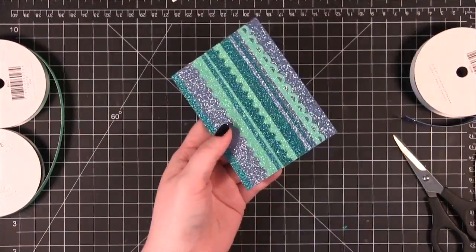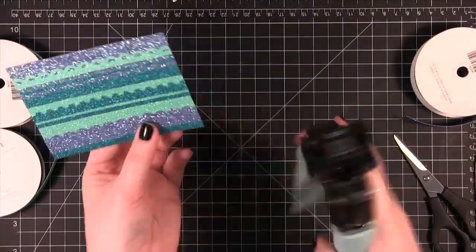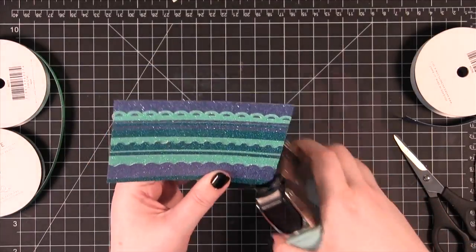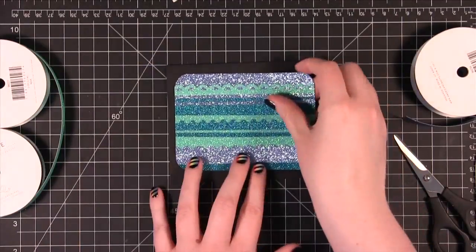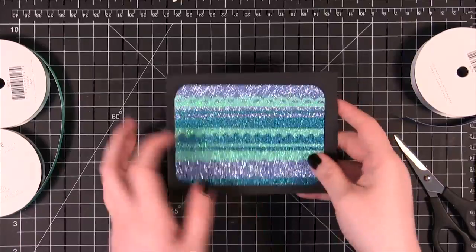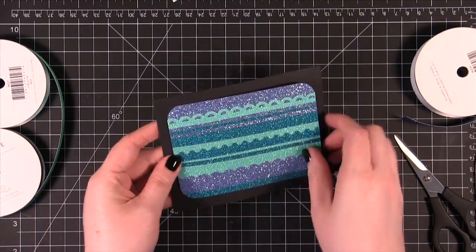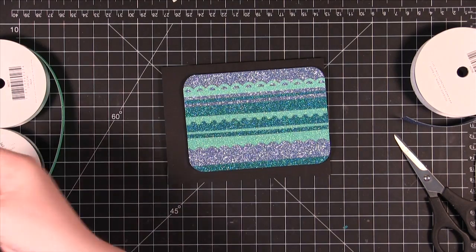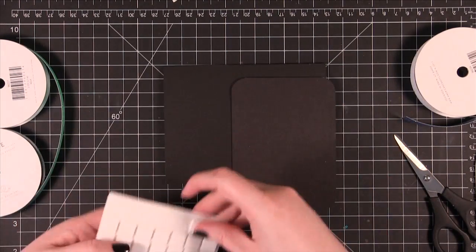Alright I'm going to round these corners with the We Are Memory Keepers Corner Chomper. And then I'm going to put it onto my black card. I picked a black card so that the colors would really pop off that glitter. So I'm going to use some foam adhesive just to adhere that to the card.